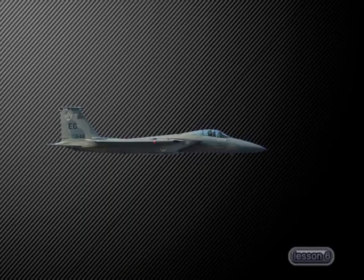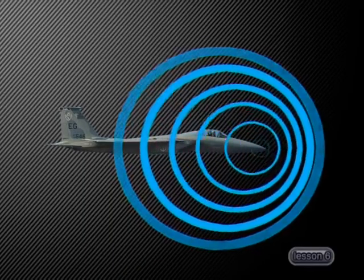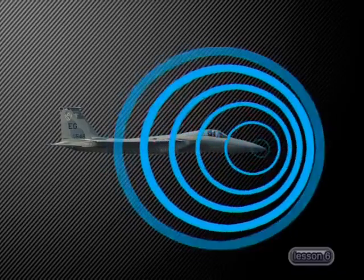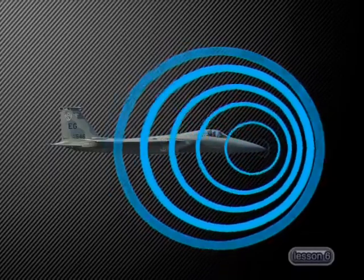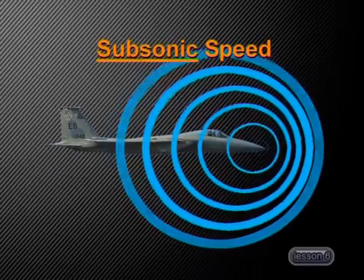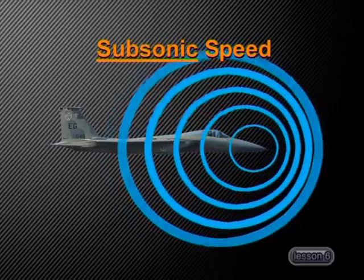We will investigate this question by looking at the movement of jet aircraft, which are able to travel faster than the speed of sound. We will begin with looking at a jet that is traveling through the air with a velocity that is lower than the speed of the sound waves coming from its engine. We say that the jet is traveling with a subsonic speed.